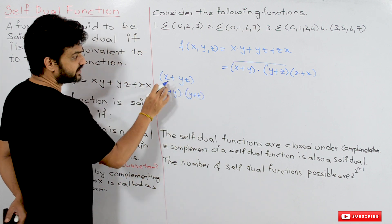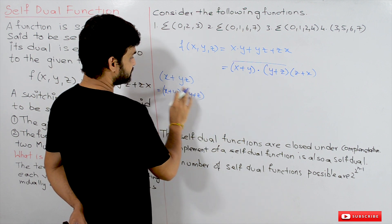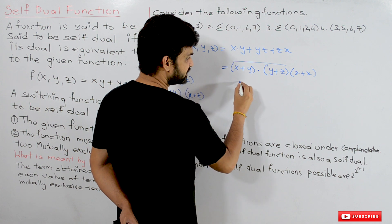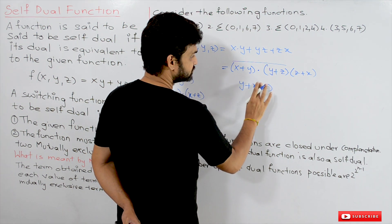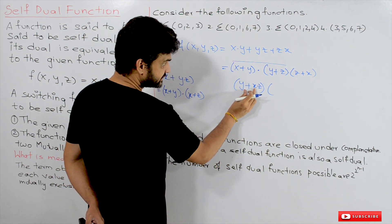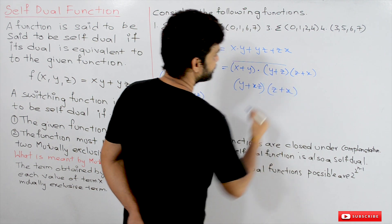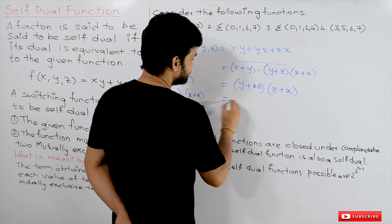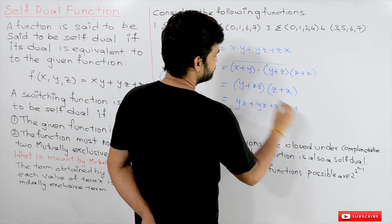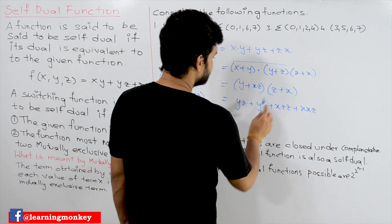By the distributive law, x + yz can be represented as (x + y)(x + z). Applying this, y + xz equals (y + x)(y + z). Expanding this gives yz + yx + xz.